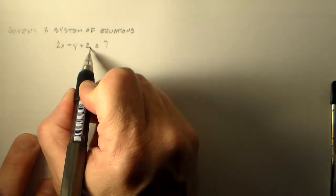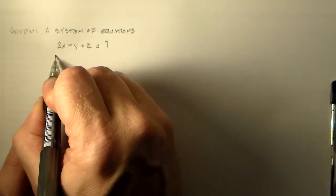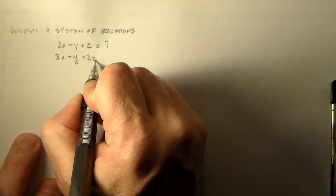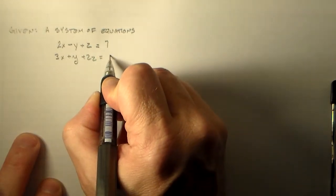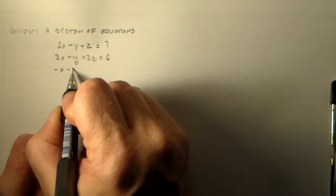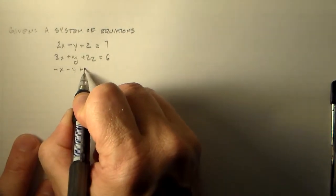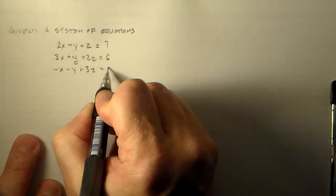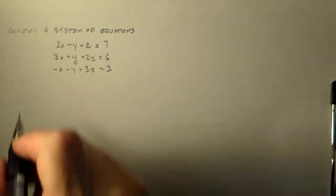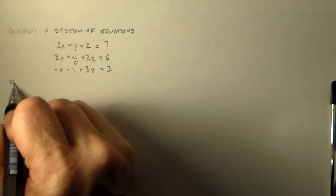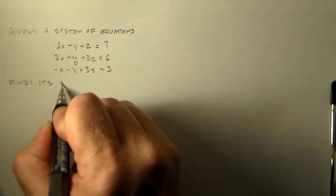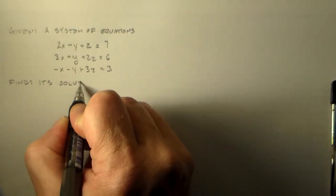2x minus y plus z equals 7. 3x plus y plus 2z equals 6. And minus x minus y plus 3z equals 3. Okay? So those are the things that we'd like to look at, and we'd just like to find its solution.